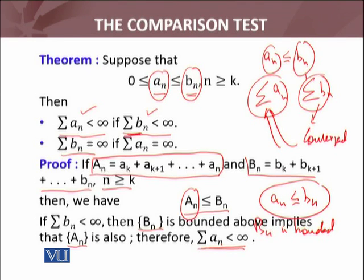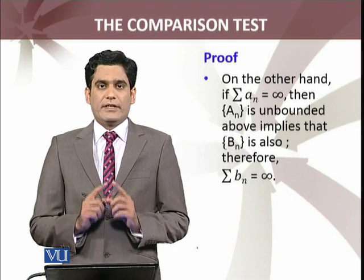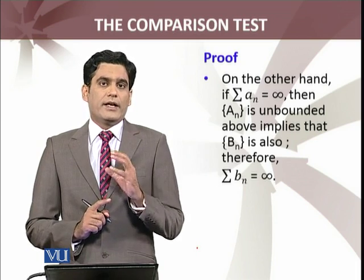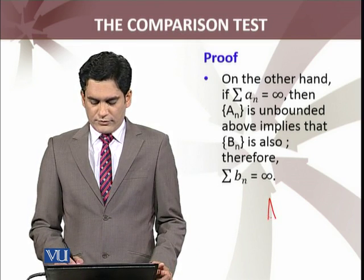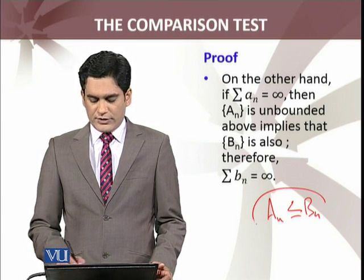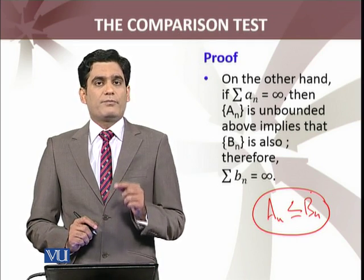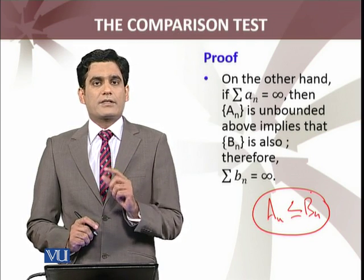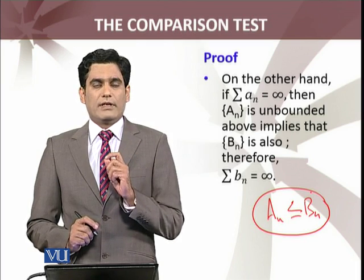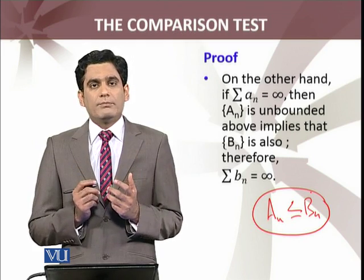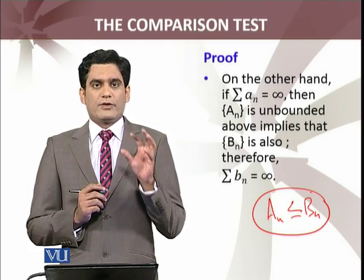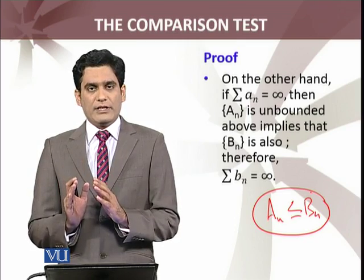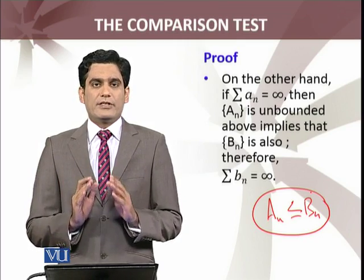On the other hand, agar aapke paas jo hai infinite series a_n woh diverge kar rahi hai infinity ko, it means ke sequence of partial sum jo hai a_n ka woh unbounded hai. Aur a_n sequence of partial sum less than or equals to b_n — yeh relationship humare paas hai. Agar sequence of partial sum of series a_n is unbounded toh the sequence of partial sum of series b_n wali series jo capital B_n humne lena hai, of course woh bhi unbounded hoga. Hence smaller series summation a_n agar diverge kar rahi hai to infinity, toh b_n wali jo series hai woh bhi diverge karegi — hence it completes the proof.